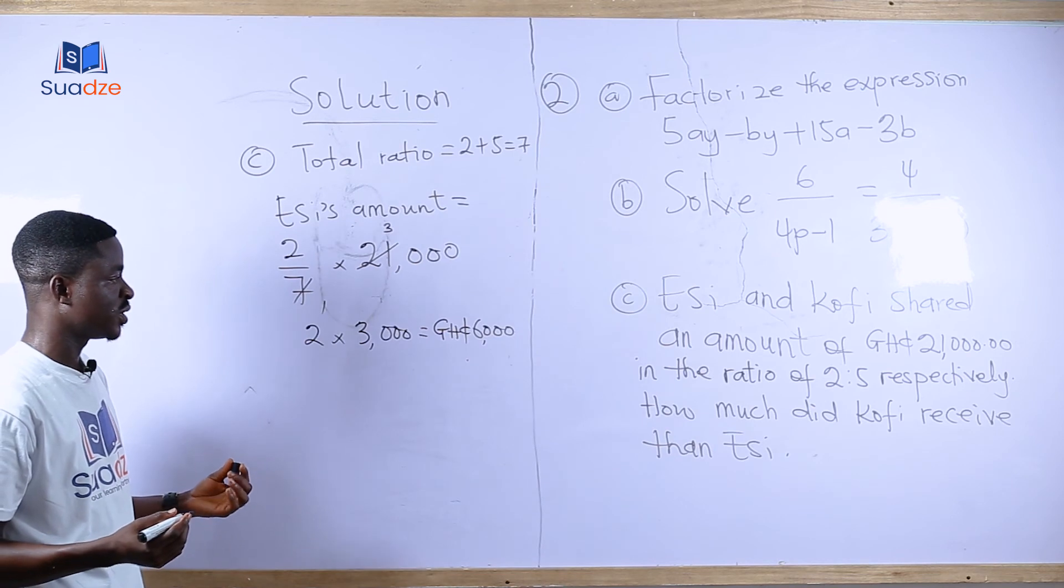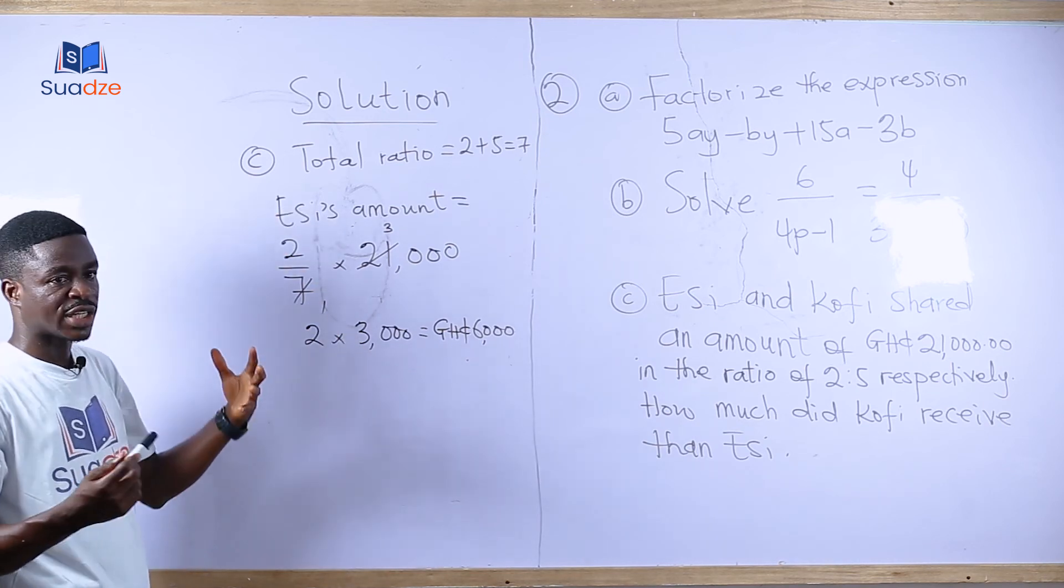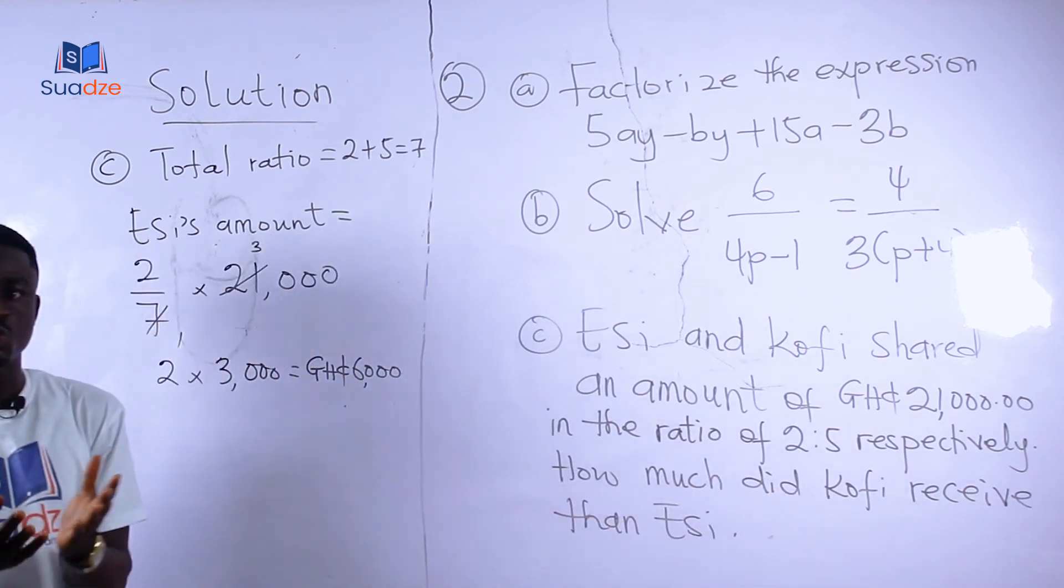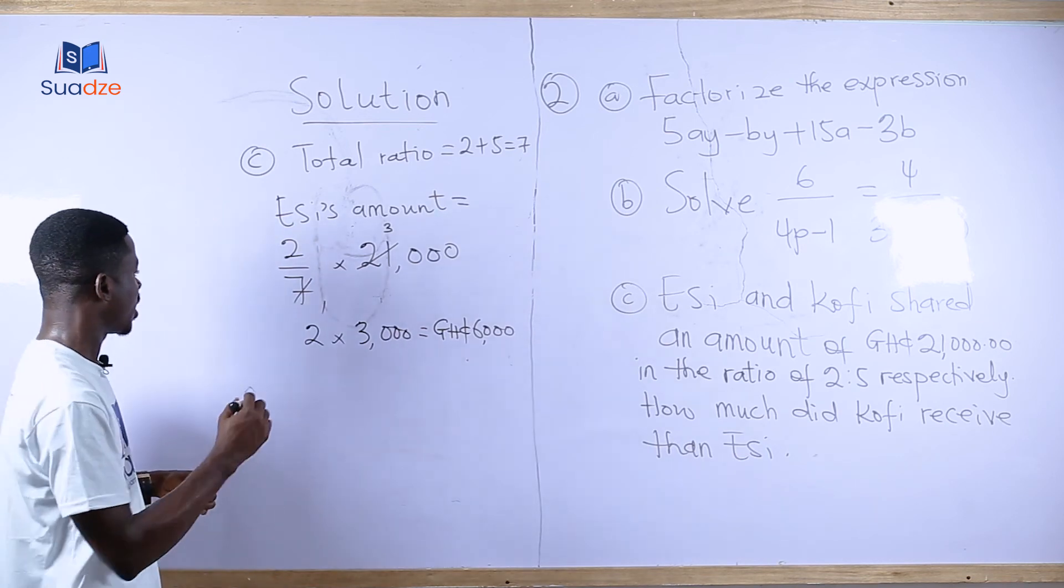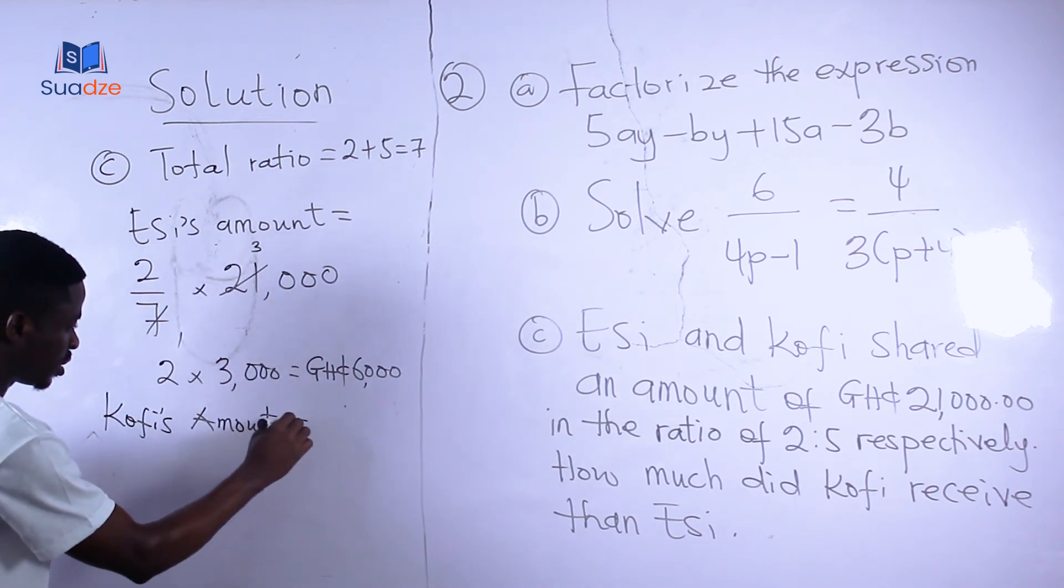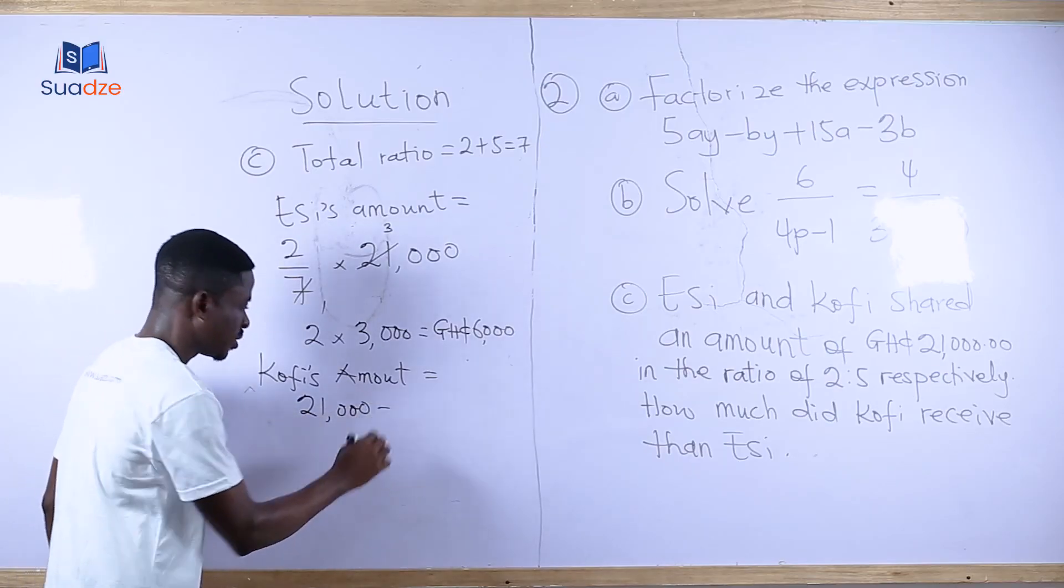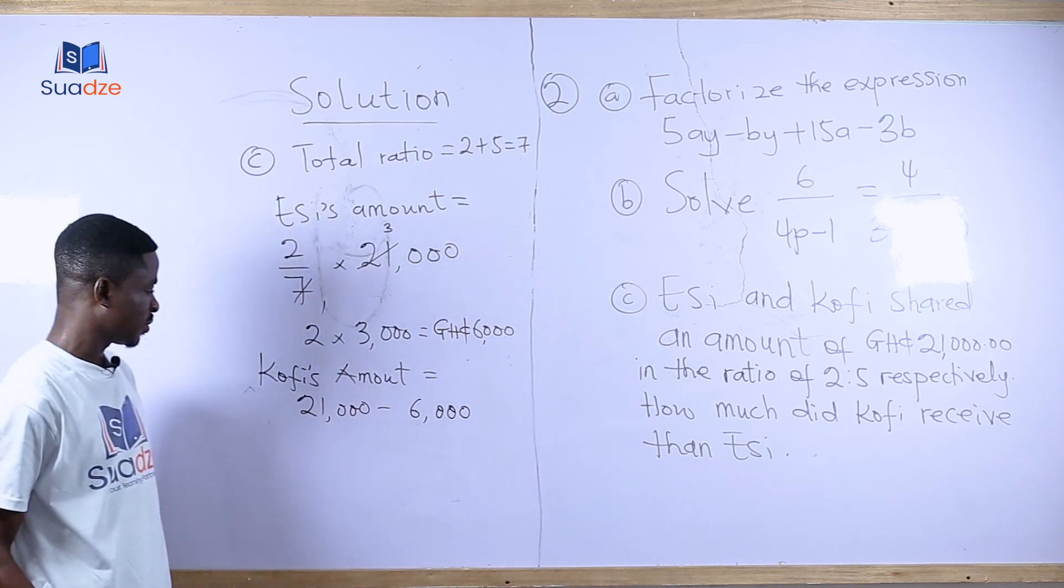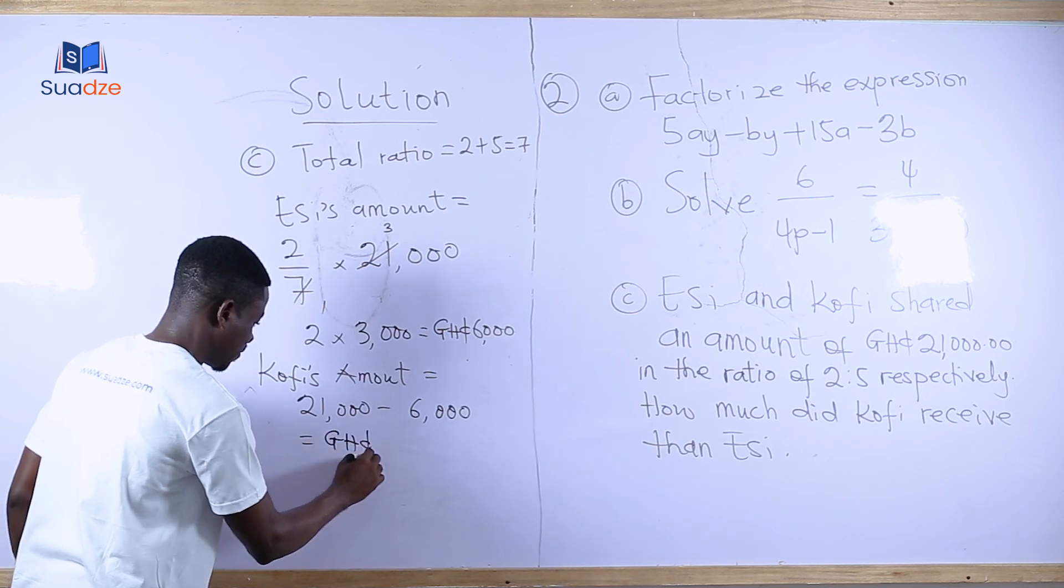Now let's look at the amount Kofi received. There are two methods. You can go through this same method, or you can subtract AC's amount from the total amount because there are two people sharing one thing. To find Kofi's amount: Kofi's amount equals the total amount, which is 21,000 minus the amount AC received, which is 6,000. So 21,000 minus 6,000 equals 15,000.